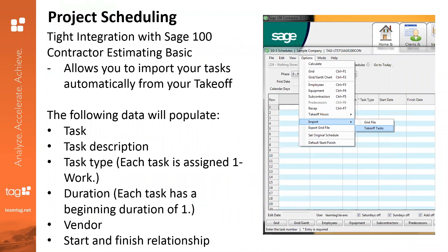This project scheduling feature really has tight integration with SAGE 100 Contractor Estimating Basic, which is the estimating module within the accounting system — different from the SAGE Estimating that's offered separately, which is a little more robust. I would encourage all accounting users to really tightly integrate their estimators and project managers. That's the whole benefit of this all-in-one system that takes advantage of everything in one database. It allows you to import tasks automatically from your takeoff — once you've built out that takeoff and noted all of the tasks, you can easily import them.